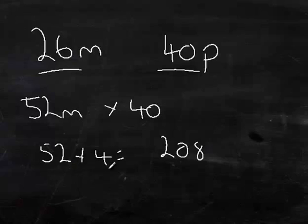It's easier. Think of 52 times 2 and then times 2 again. And 52 times 40, you just add a zero on the end here. 2,080 pence, better known as £20.80.